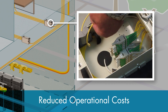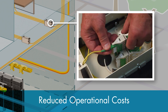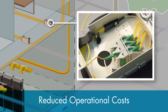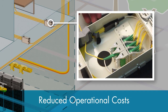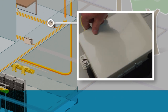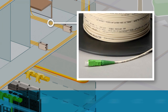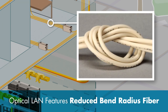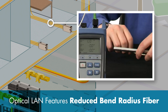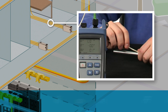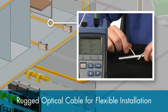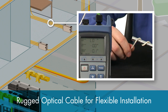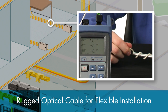IFDTs are typically placed within 100 feet of a group of users, eliminating home runs to the telco closet for horizontal cabling and reducing ongoing operational costs. The Optical LAN solution also features CommScope's micro-cable technology with reduced bend radius fiber, a flexible optical fiber cable that is designed for easier, faster installations while still preserving signal strength.